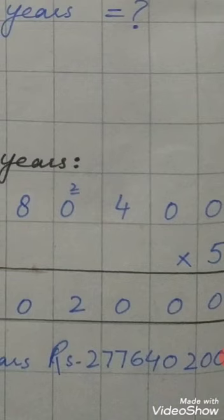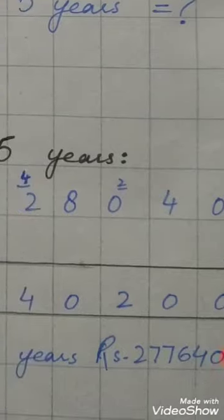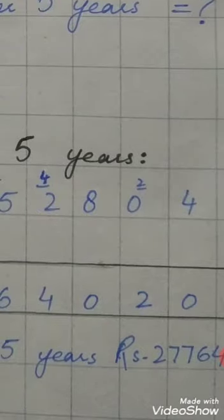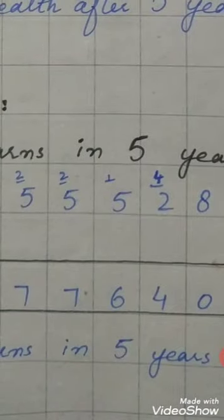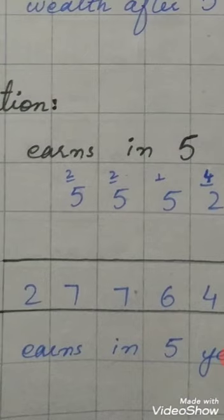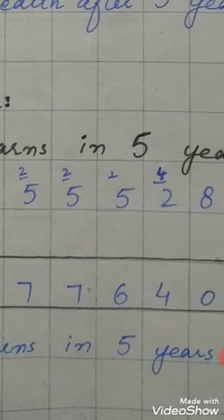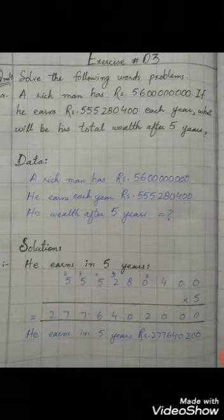He earns in five years: 555,280,400 multiplied by 5. Starting calculation: 5 times 0 is 0, 5 times 0 is 0, 5 times 4 is 20, write 0 carry 2. 5 times 0 is 0 plus carry 2 is 2. 5 times 8 is 40 plus carry is 44, write 4 carry 4. 5 times 2 is 10 plus carry 4 is 14, write 4 carry 1. 5 times 5 is 25 plus carry 1 is 26, write 6 carry 2. 5 times 5 is 25 plus carry 2 is 27, write 7 carry 2. Last 5 times 5 is 25 plus carry 2 is 27, so we write 27.